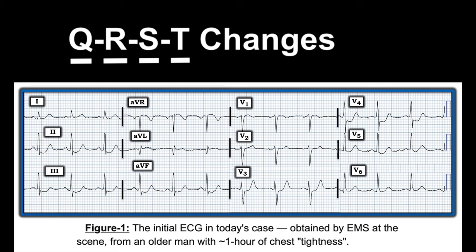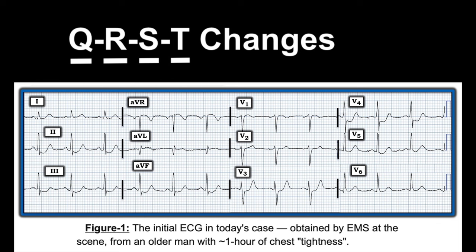Now for ST segments and T waves: there is ST depression in each of the inferior leads with an upright, tall terminal T wave. ST depression begins in leads V3 through V6, and is greatest in V3 and V4, where the T waves are also very tall. Importantly, the ST segment in V2 is isoelectric — not elevated — but normally V2 should have a slight amount of ST elevation. This is not normal; it should be a little elevated.